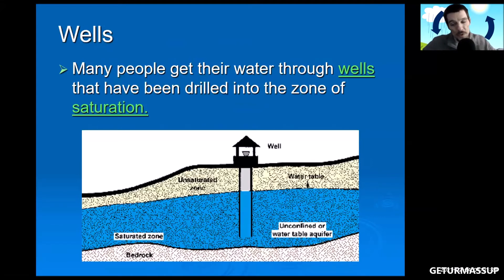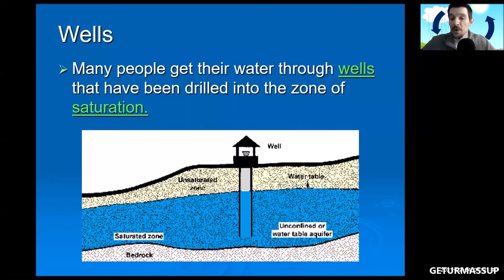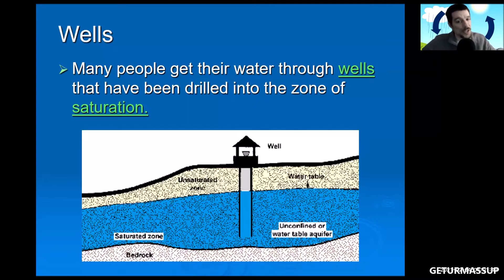Looking at the image, the water below the earth's surface is the aquifer, and humans have installed a well. Many people get their water through wells drilled into the zone of saturation — that's something to add to your notes. When you drill a well, you want to make sure it goes deep enough so you can actually get that water up.